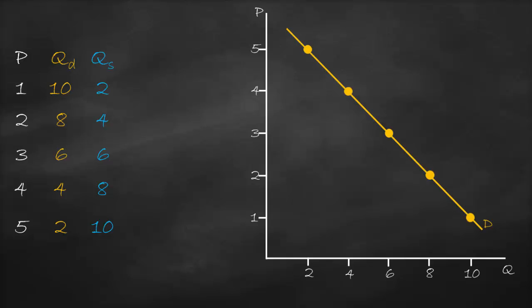Let's connect all the dots together — it will give us our downward-sloping demand curve. It's a downward slope because we have a negative relationship between price and quantity demanded: if price goes up, quantity demanded will be lower, and vice versa. Now let's draw the supply curve: at price of 1, quantity supplied is 2; at price of 2, it's 4; at price of 3, it's 6; at price of 4, it's 8; at price of 5, it's 10. Connecting all the dots gives us our upward-sloping supply curve.